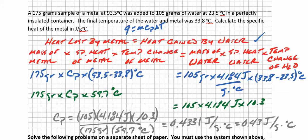Again, the heat lost by the metal is equal to the heat gained by the water. Now let's put some numbers in. The mass of the metal is 175 grams times its specific heat, that's what we're looking for, times the difference in temperature. The metal went from 93.5 degrees Celsius to 33.8 degrees Celsius. It was cooled. The metal was originally warmer, and then it cooled in this cooler water. This is the change in temperature.